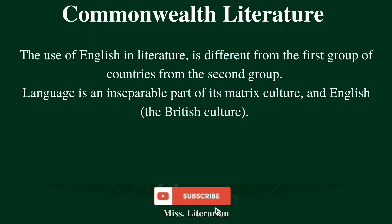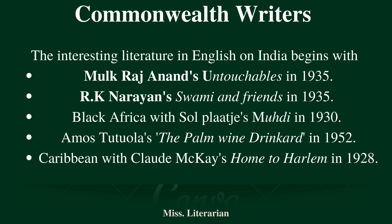The use of English in literature is divided into two groups. The first group is different from the second in that language is an inseparable part of its matrix culture, and English likewise is an inseparable part of British culture. The interesting literature in English in India begins with Mulk Raj Anand's Untouchables and R.K. Narayan's Swami and Friends in the year 1935. Similarly, in Black Africa with Sol Plaatje's Mhudi in 1930 and Amos Tutuola's The Palm Wine Drinkard in 1952, and in the Caribbean with Claude McKay's Home to Harlem in 1928.